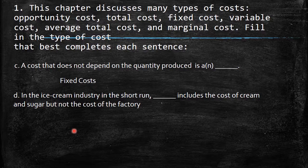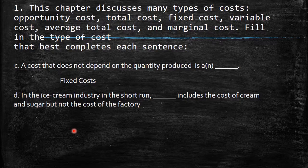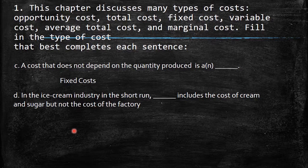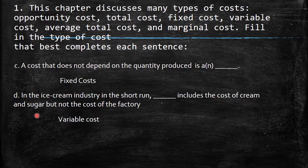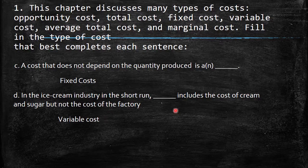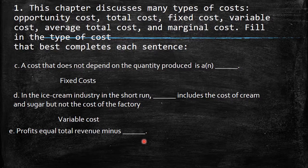The next sentence: in the ice cream industry in the short run, this includes the cost of cream and sugar but not the cost of the factory. Remember the difference between short run and long run — in the long run all costs are variable, but in the short run we have fixed costs. So the answer here is variable cost.